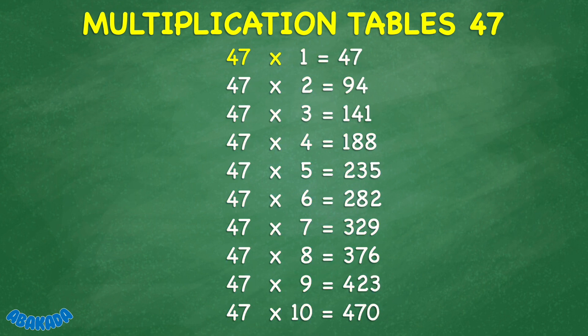47 times 1 equals 47. 47 times 2 equals 94. 47 times 3 equals 141. 47 times 4 equals 188. 47 times 5 equals 235.